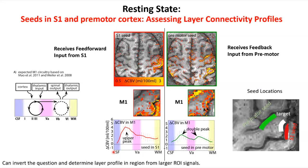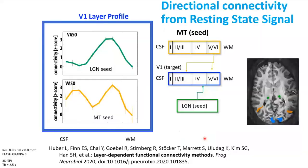When you take a seed in pre-motor areas, you see a selective upper-layer correlation. When you take a seed in somatosensory areas, you get a double peak that shows feedback. That's a profoundly different kind of result than any single probe in any one area could produce.